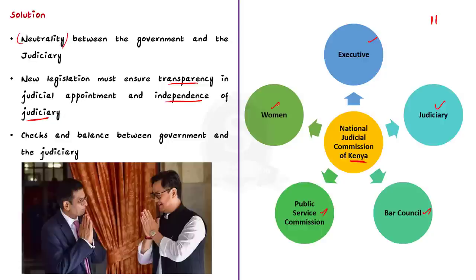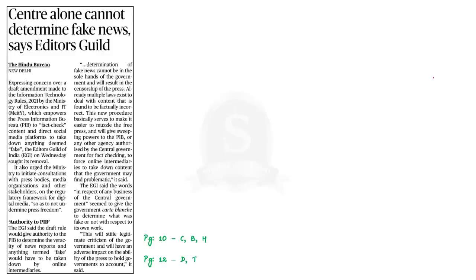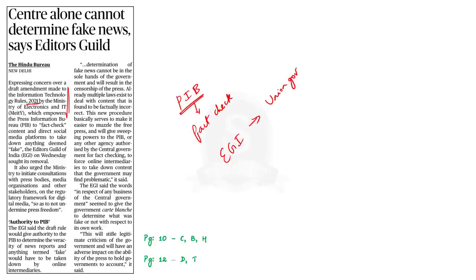Through this discussion, we saw about the memorandum of procedure, the fourth judges case, the government's stance then and now, and the law minister's recent suggestions. Now let's move on to the next news article. This article talks about the draft amendment made to the Information Technology Rules 2021 by the Ministry of Electronics and IT. This amendment empowers the Press Information Bureau to fact-check content and direct social media platforms to take down anything deemed fake. The Editor's Guild of India said that leaving the determination of fake news solely in the hands of the government will result in extended censorship of the press, so it demanded the removal of this amendment.